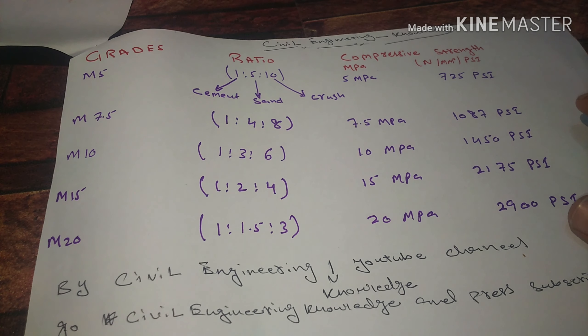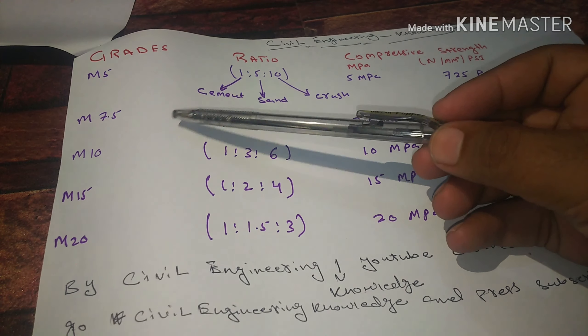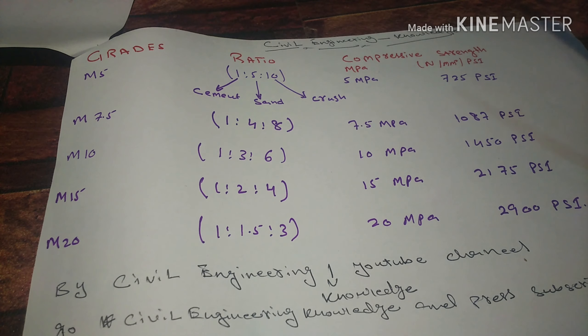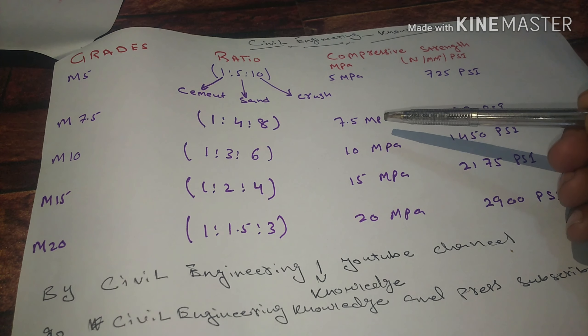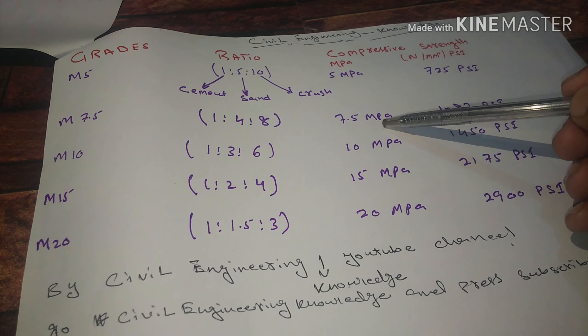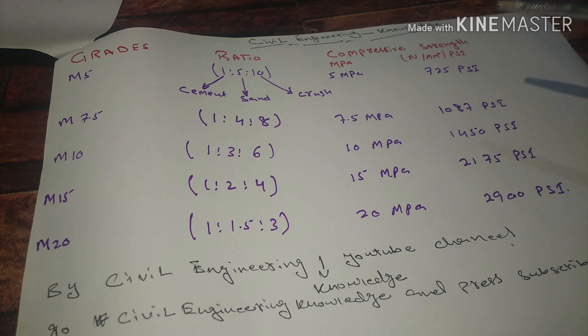The other one is M7.5 concrete, which we all know is lean concrete. The unit is 7.5 MPa and the PSI standard is 1087 PSI.